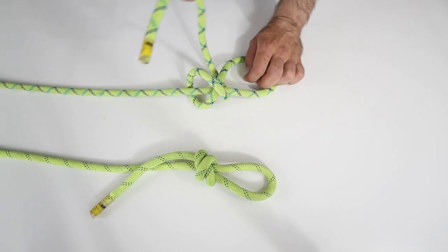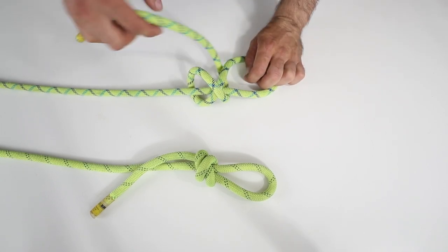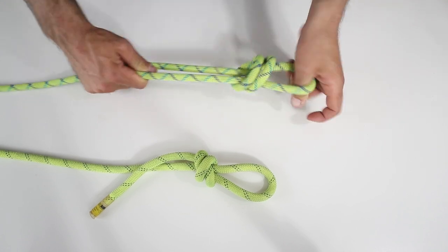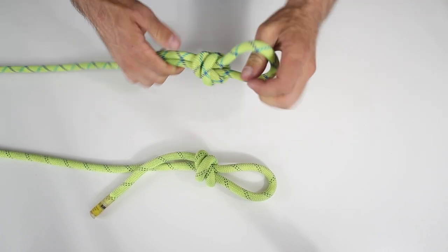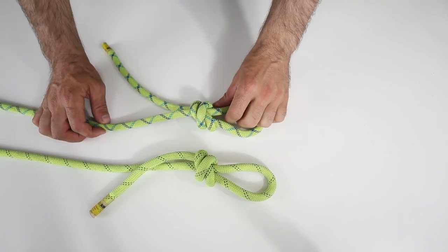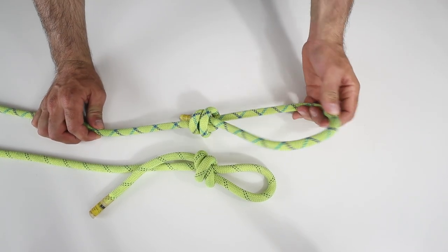Instead of going over here and passing it through, we're going to send the loop up to the bottom. And all of a sudden it looks just like that one. Except when you fall, this is going right out of here.